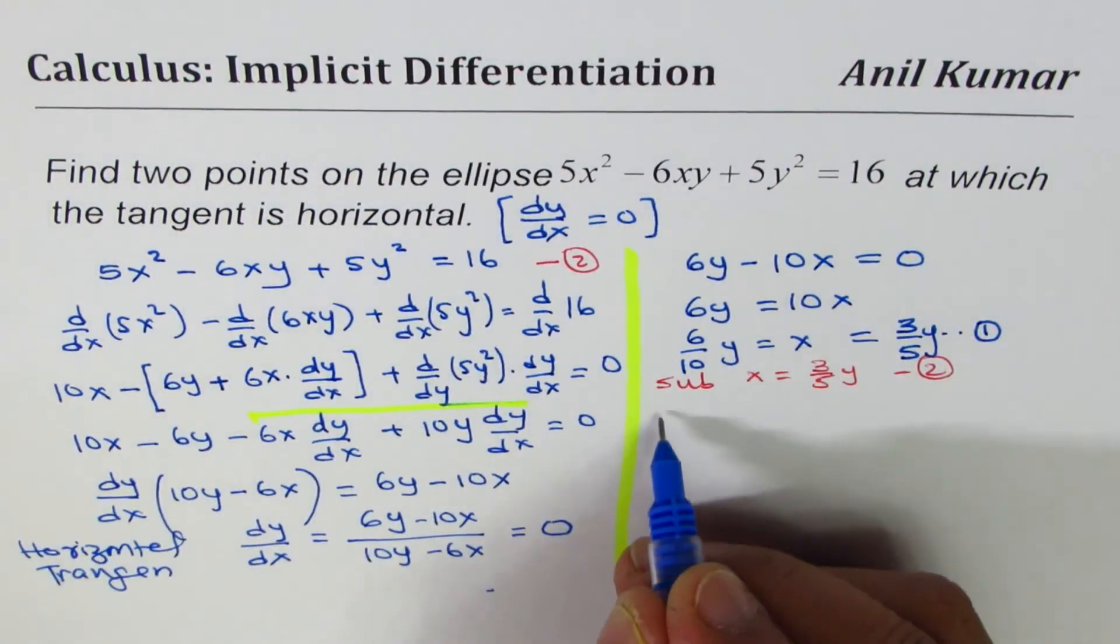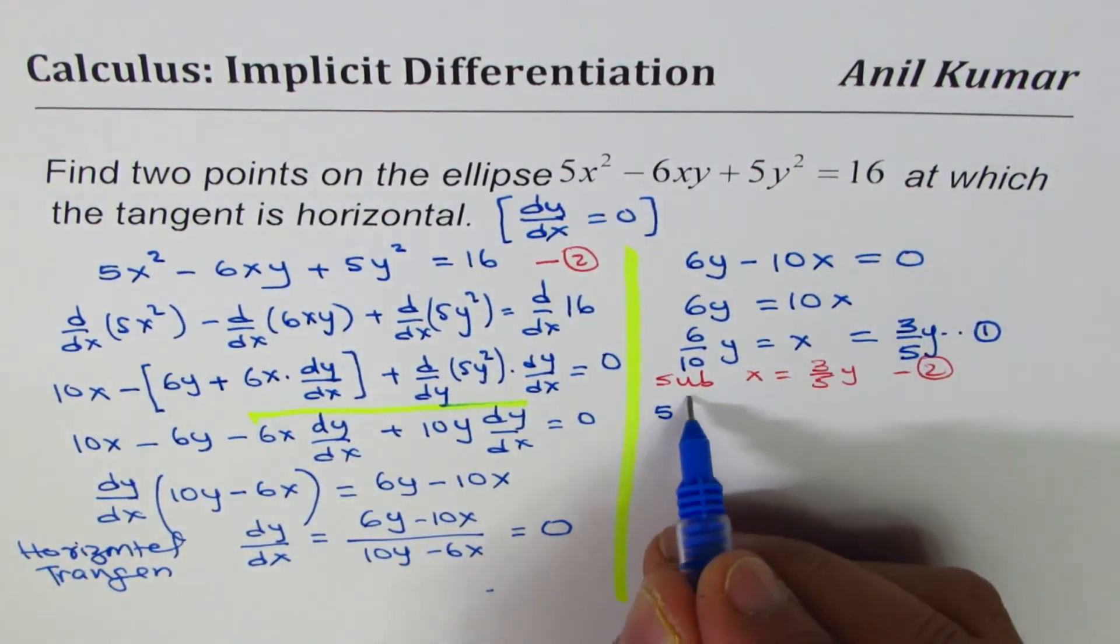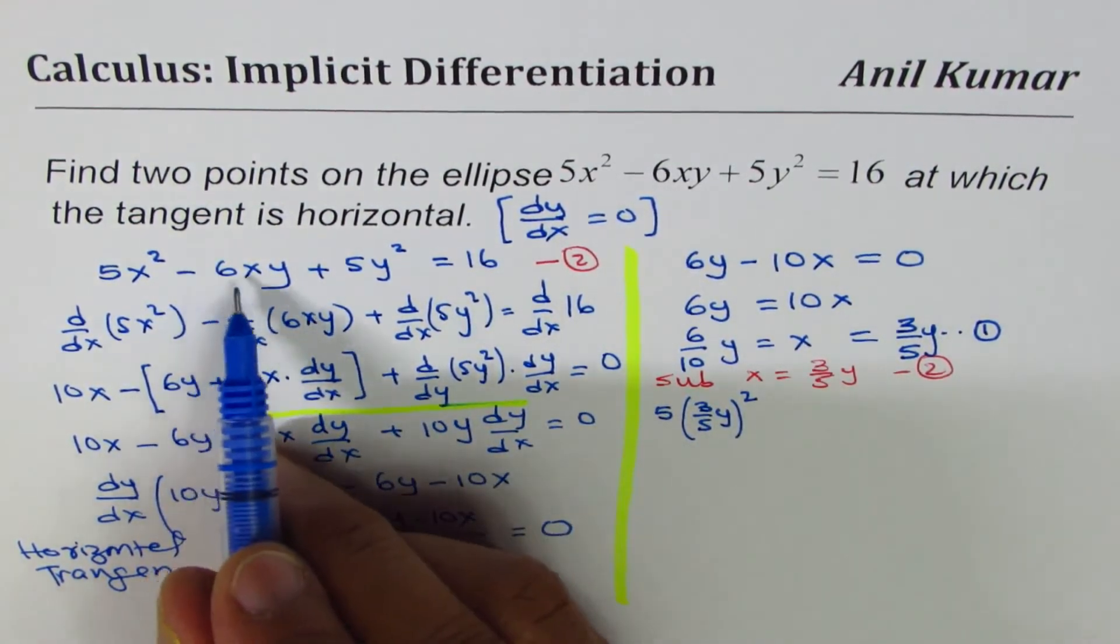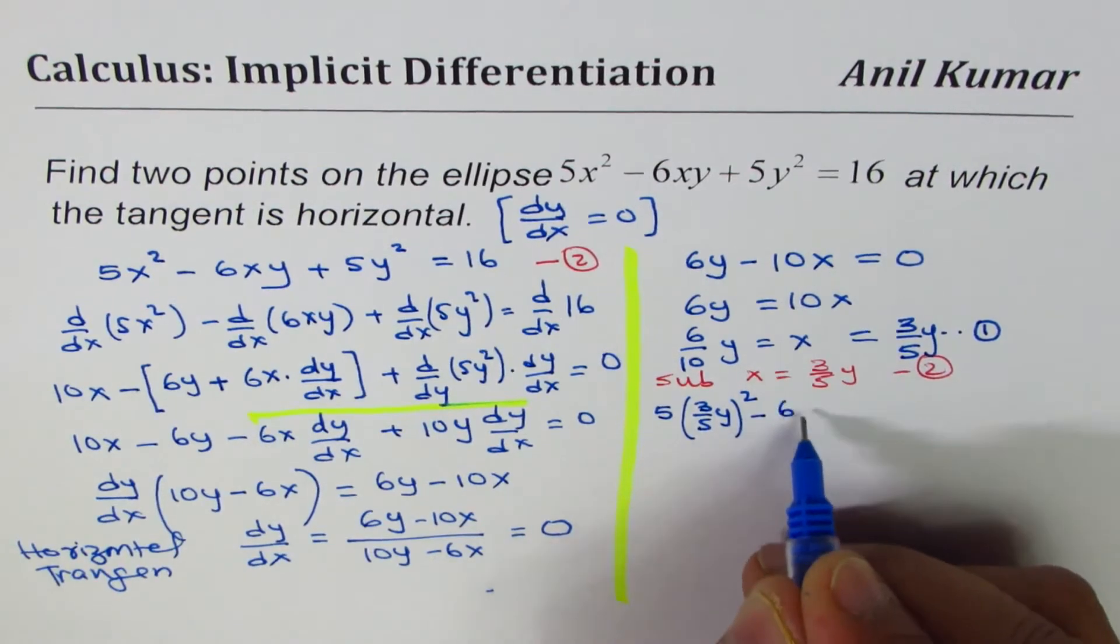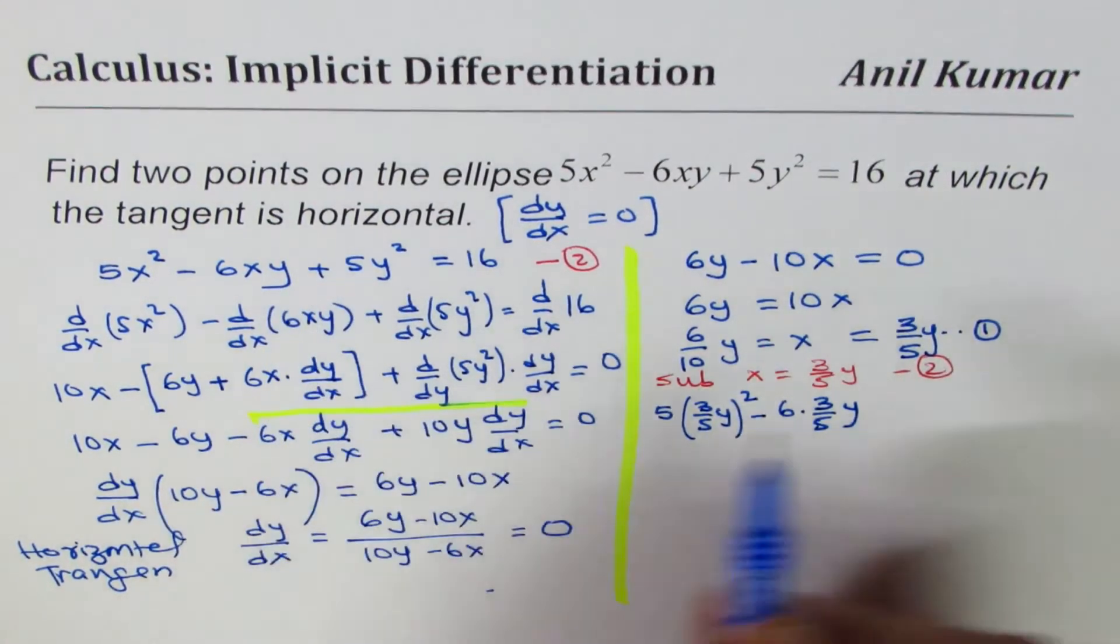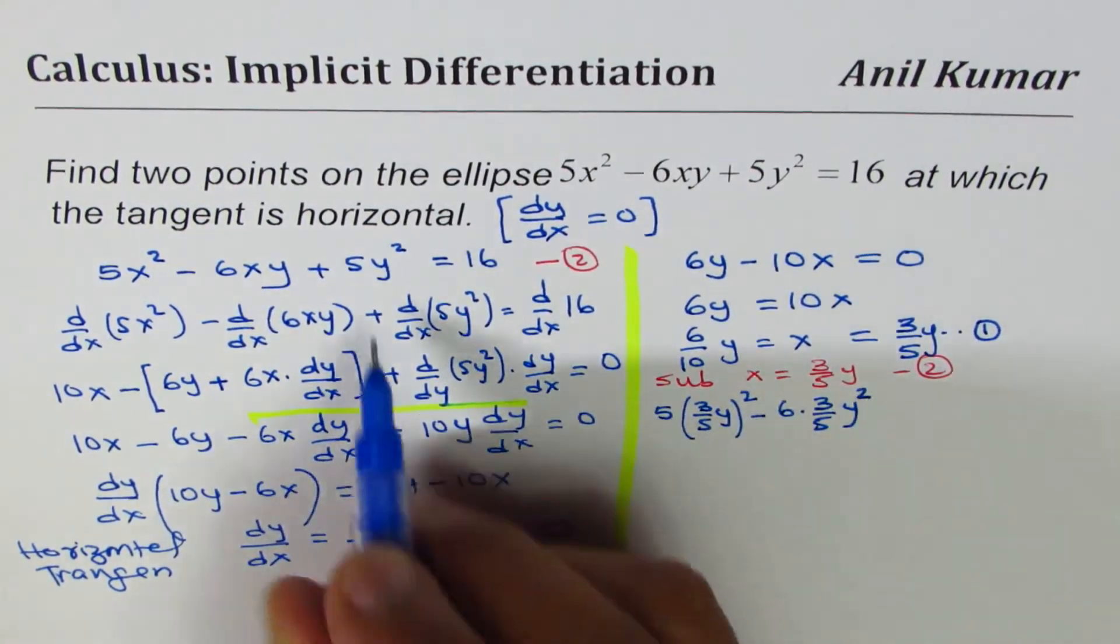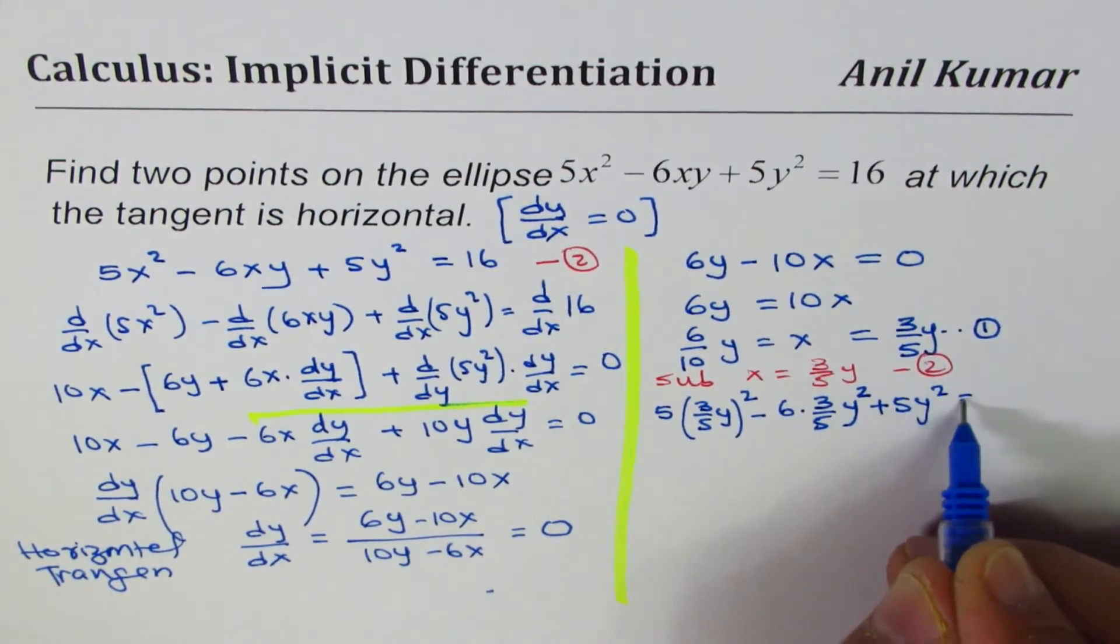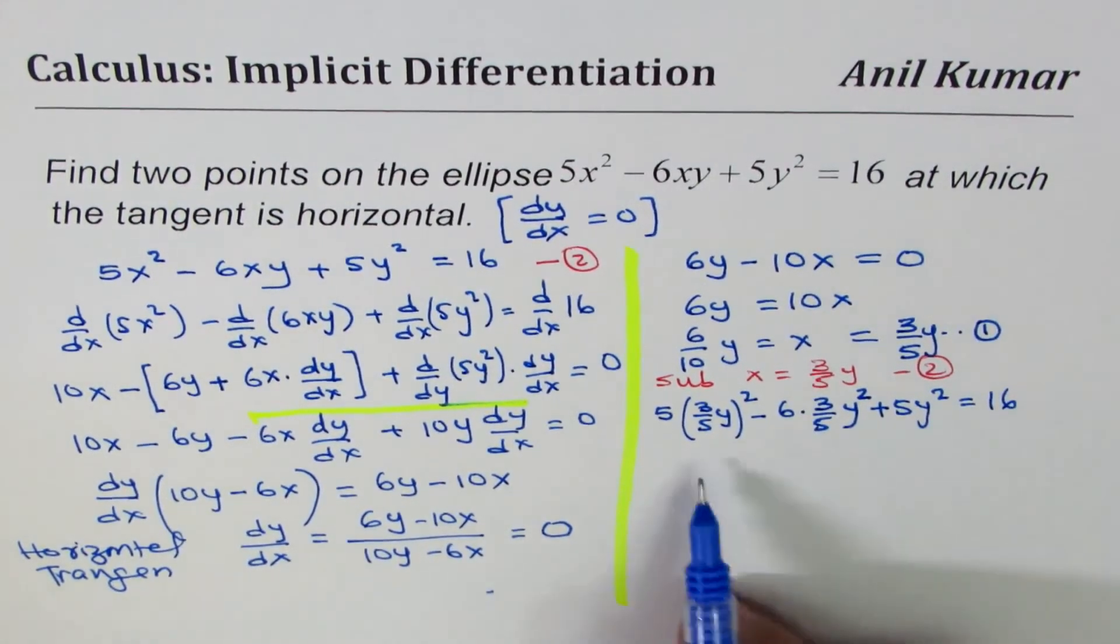So we will sub x equals to 3/5y in equation, let us call this as 2. 5x², that means 5 times x is now 3/5y squared, minus 6xy, minus 6 times 3/5y, we have y already, so it becomes y², plus 5y² equals to 16.